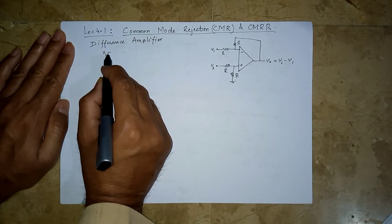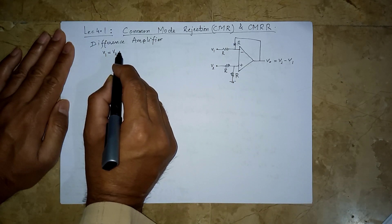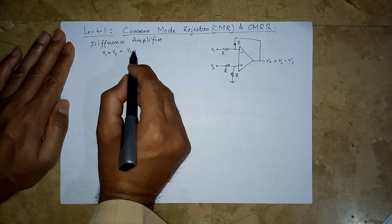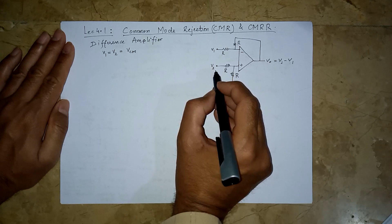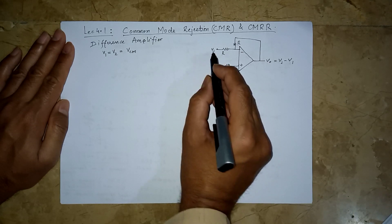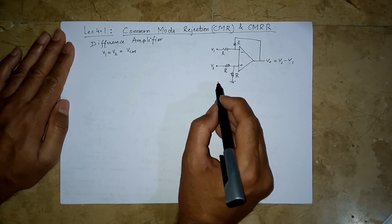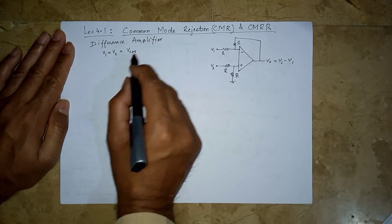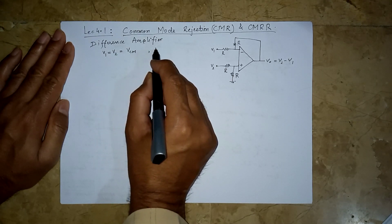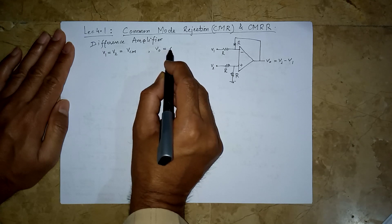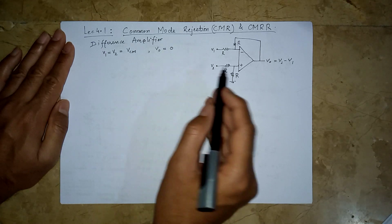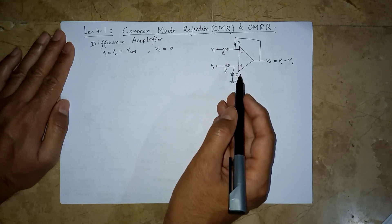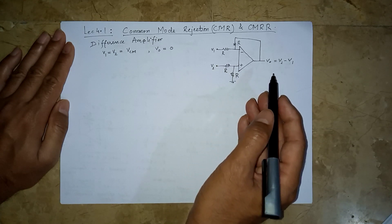So if v1 is equal to v2 — that is, the same signal, a common mode signal, is applied at both inputs — here is a source Vcm and another source Vcm with reference to ground. Then Vo must be zero. But this is what our ideal op-amp model says.